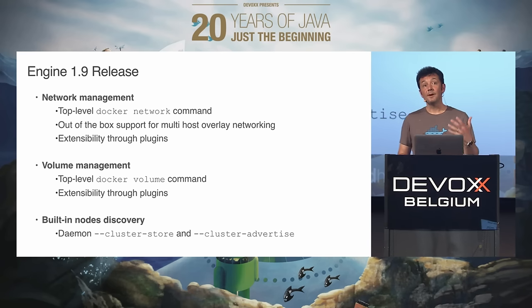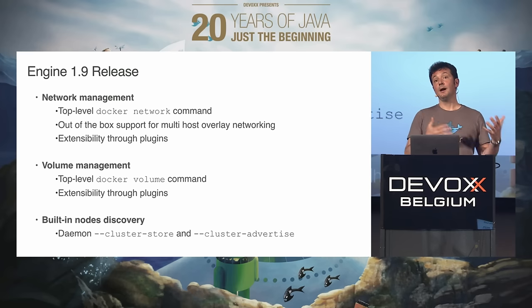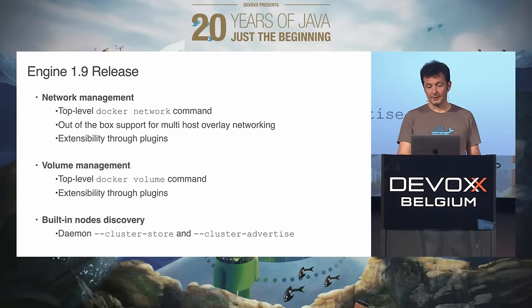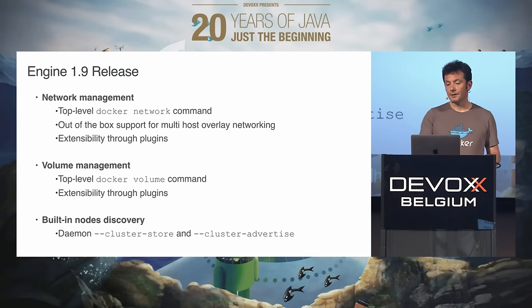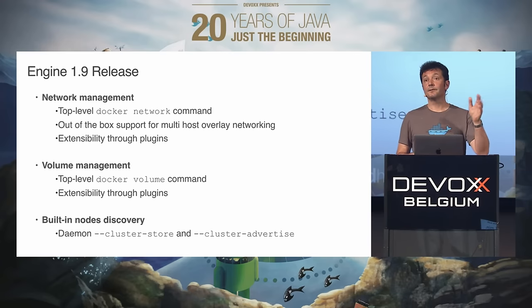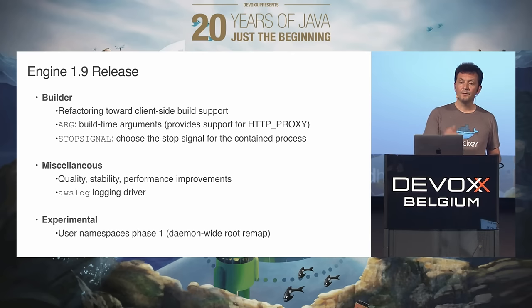Docker 1.9. One of the main features in 1.9 is Docker networking and volumes, which were present in an experimental branch and are now part of mainstream. Out of the box you have support for overlay networking in Docker and also in Swarm — super important for orchestration. Node discovery is better now with the cluster store and cluster advertise options for the engine, so your engines can say they're at this IP address and tell that to a discovery service that could be Consul or etcd, and then they all discover each other. Docker volumes as well as networking both have a plugin architecture.